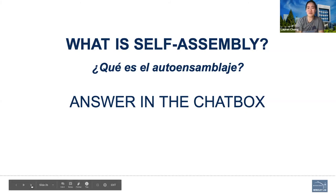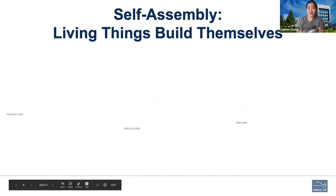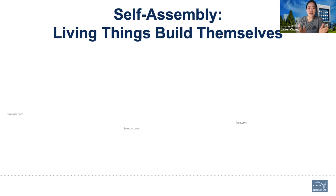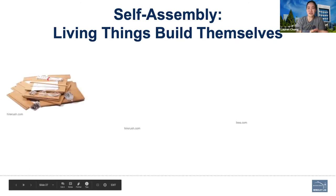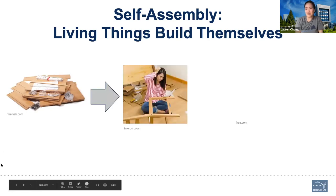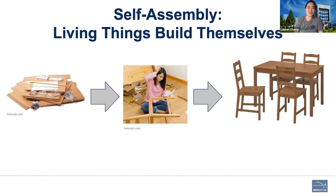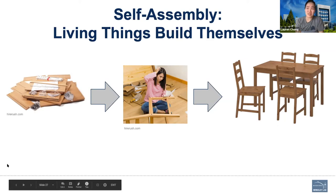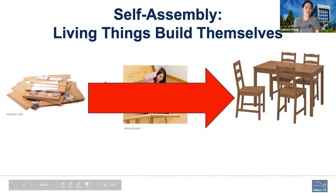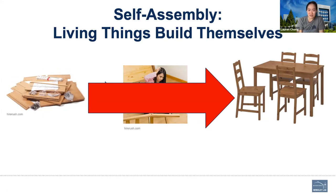Self-assembly means what it sounds like — it refers to the fact that living things can build themselves from their individual starting components. But let's think of it another way. Say you want to build a piece of furniture, so you go out to IKEA and get this box of parts. You have to take those pieces and put them together step by step, which takes a long time and is sometimes really frustrating. Self-assembly means you could take those pieces, sort of shake them together into your living room, and end up with a fully assembled dining set — skipping the middle part of having to put everything together. This is something that all living things can do, and researchers are trying to copy this ability.